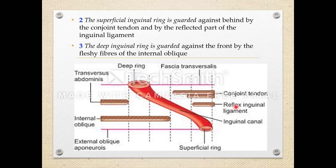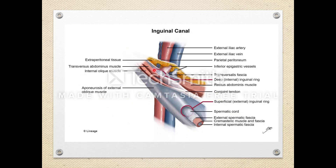The superficial inguinal ring is guarded behind by the conjoint tendon and the reflected part of the inguinal ligament. The deep inguinal ring is guarded in front by the internal oblique muscle. So both rings or openings are strengthened — the superficial inguinal ring posteriorly and the deep inguinal ring anteriorly.